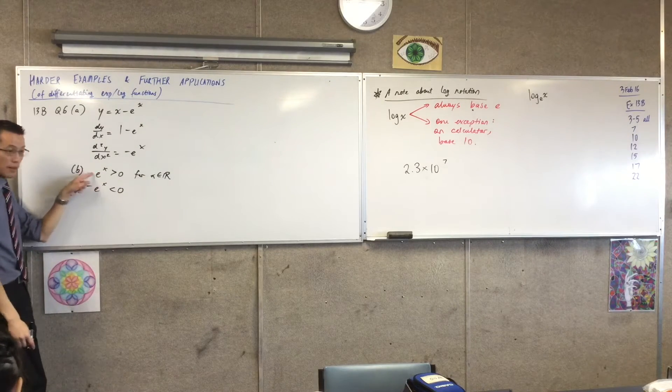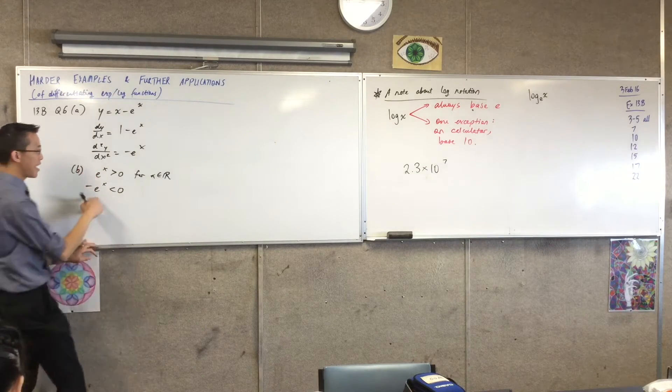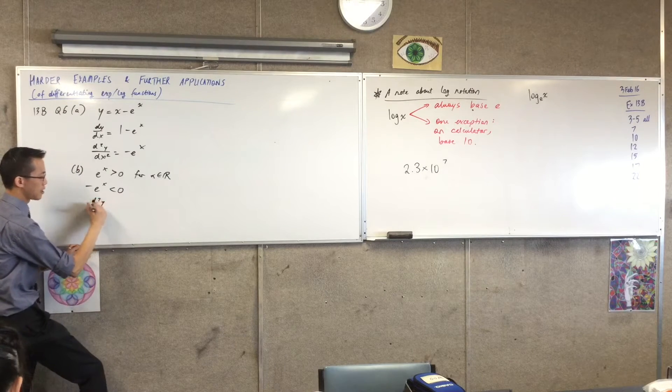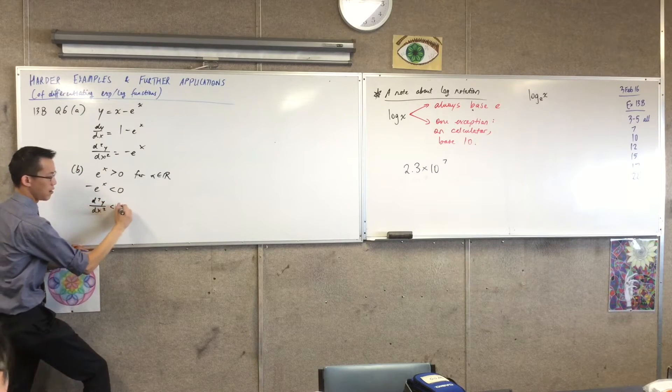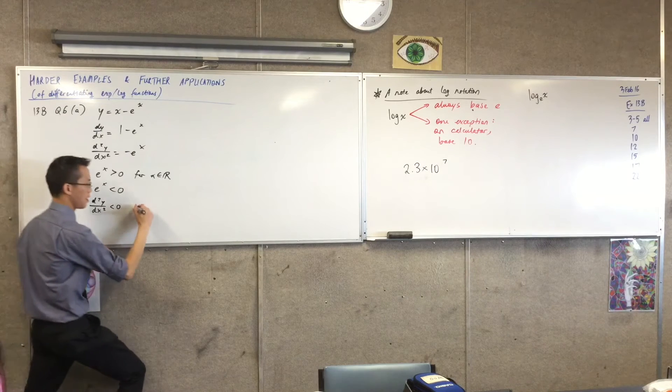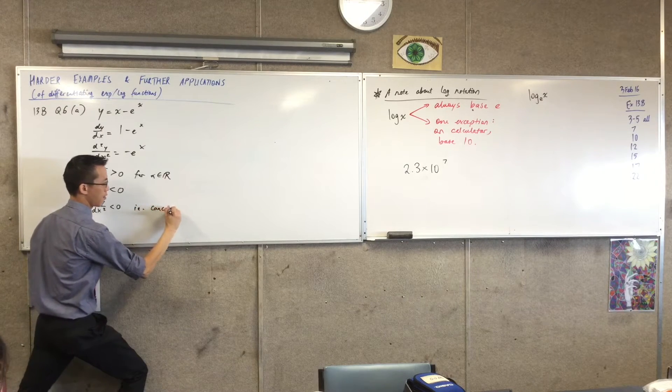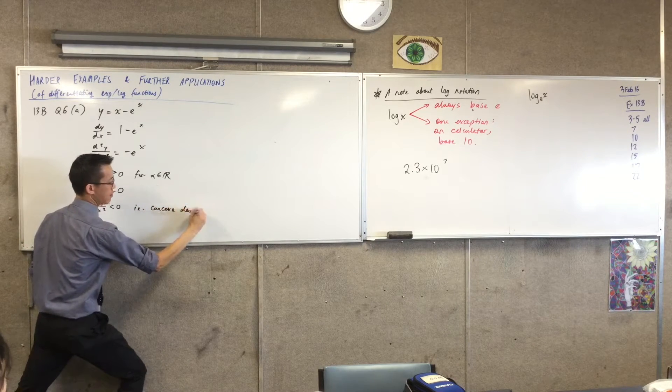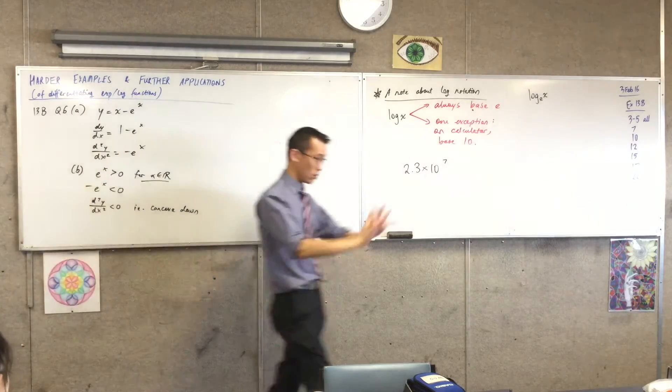So, everywhere that we're interested on the Cartesian plane, e to the x is above the axis. You guys know exactly what it looks like, right? So, since that is the case, negative e to the x will have the opposite sign. Like I've just drawn this conclusion straight from this. I've flipped the direction. And that, of course, is what I've already determined for the second derivative. So, in other words, concave down for this domain which I've already stated. All real values of x.